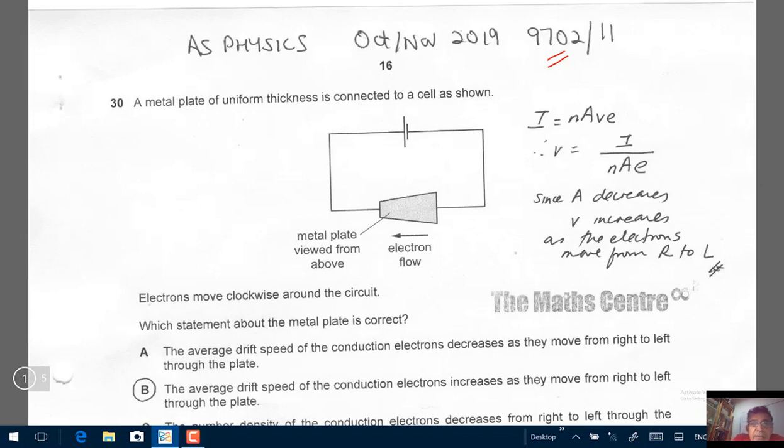A metal plate of uniform thickness is connected to a cell as shown. And they have indicated the metal plate viewed from above, electron flow, all great. Electrons move clockwise around the circuit. Which statement about the metal plate is correct?